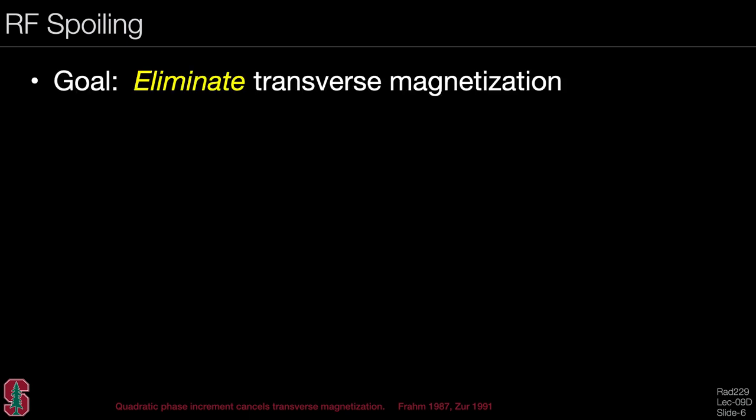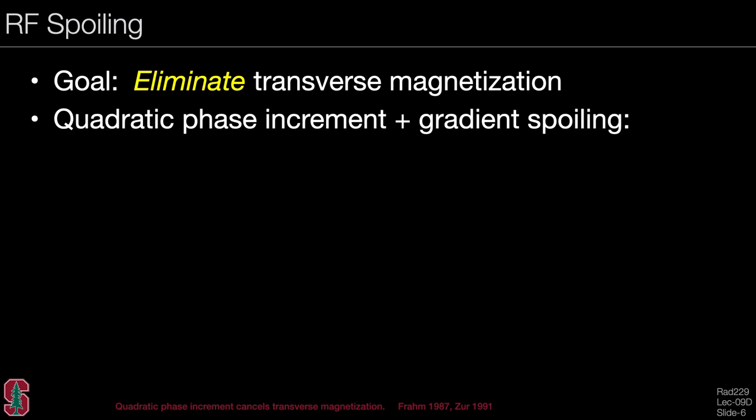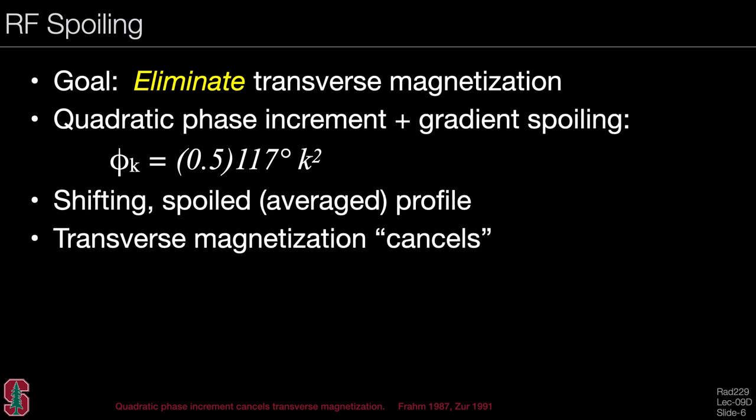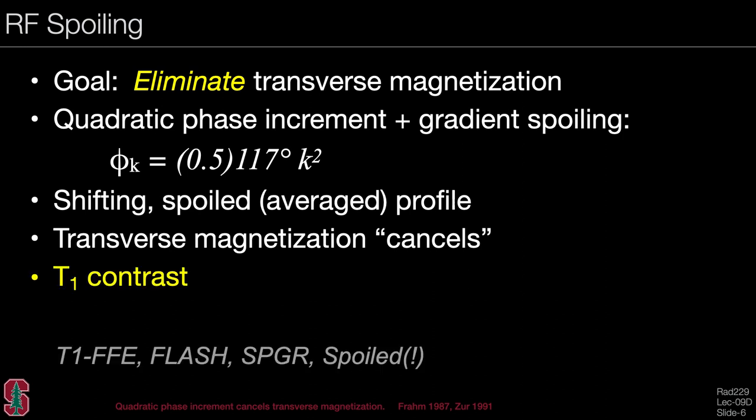In RF spoiling, the goal is to eliminate the transverse magnetization at the end of the TR, which will give us T1 contrast. We use a quadratic phase increment as well as gradient spoiling. The phase of the RF pulse on the kth repetition is equal to one-half times some phase increment times k squared, where k is the repetition number. This leads to a shifting spoiled averaged profile, the transverse magnetization cancels, and we are left with a pure T1 contrast.